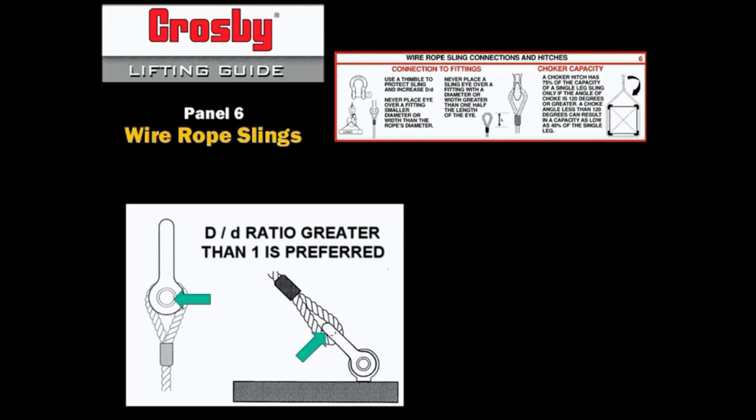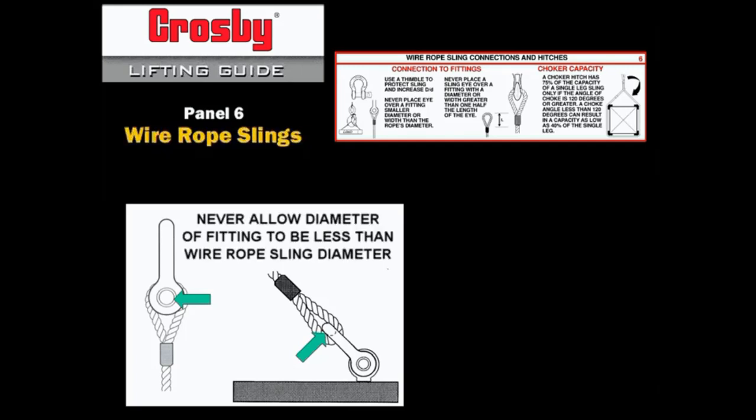Having a D to D ratio greater than 1 is preferred when connecting rigging hardware, such as a shackle, to the eye of a wire rope sling that does not have a thimble in the eye. Never allow the diameter of the fitting to be less than the wire rope sling diameter under any circumstances.